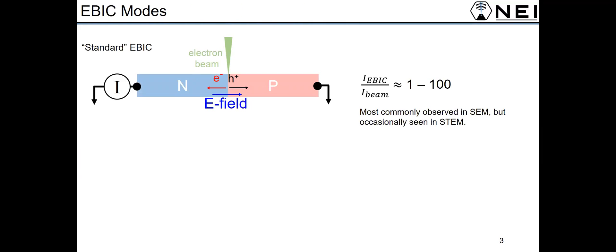The most common form of EBIC, which we refer to as standard EBIC, involves the separation of electron hole pairs that are induced by the beam in local electric fields, and this typically has a yield relative to the incident beam current of something like 1 to 100.